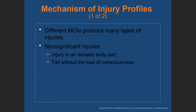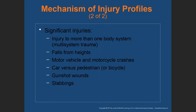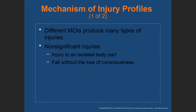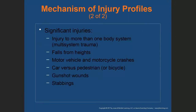Different MOIs produce many types of injuries. Non-significant injuries are specific and isolated to one area of the body. With a diffuse mechanism or significant injuries, the potential for multiple trauma — injury to more than one body system — exists. That's multi-system trauma. Falls from heights are significant: for an adult, any fall three times their height; for a pediatric patient, two and a half times their height.